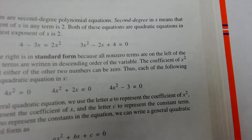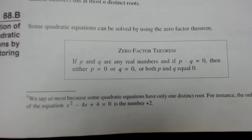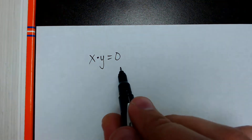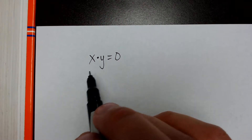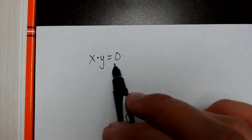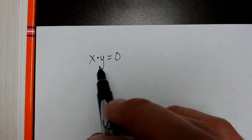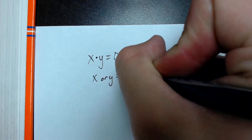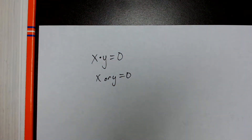Before we solve them, we have to cover something called the Zero Factor Theorem. Quite simply, what it says is: if we have two numbers being multiplied, like x times y, and their answer is equal to zero, then one of these numbers has to be zero — because any number times zero equals zero. There's no other way to get zero unless zero is involved. So in this case, x or y equals zero.